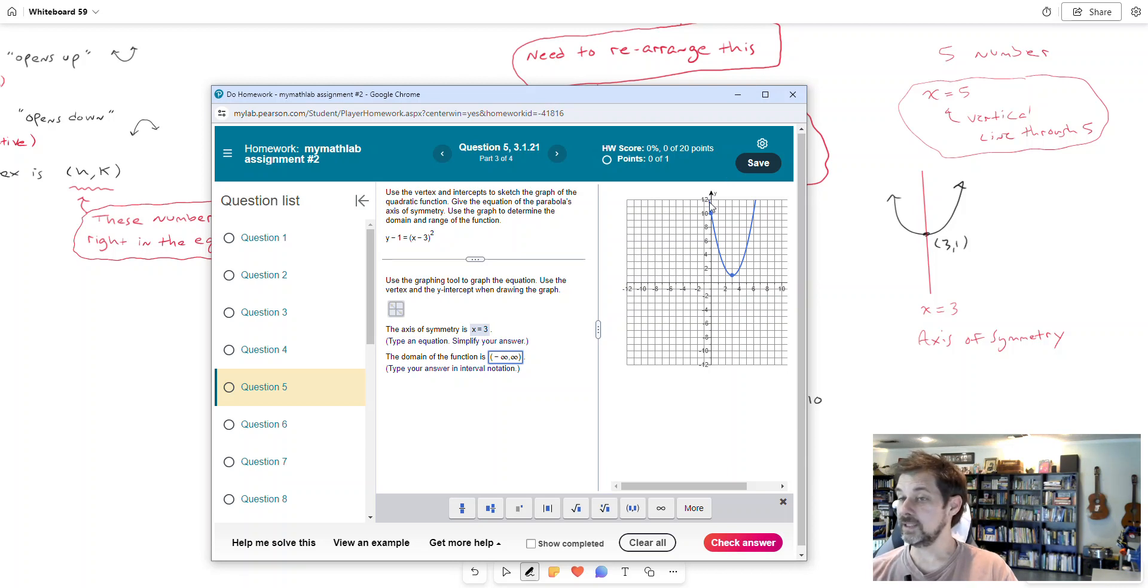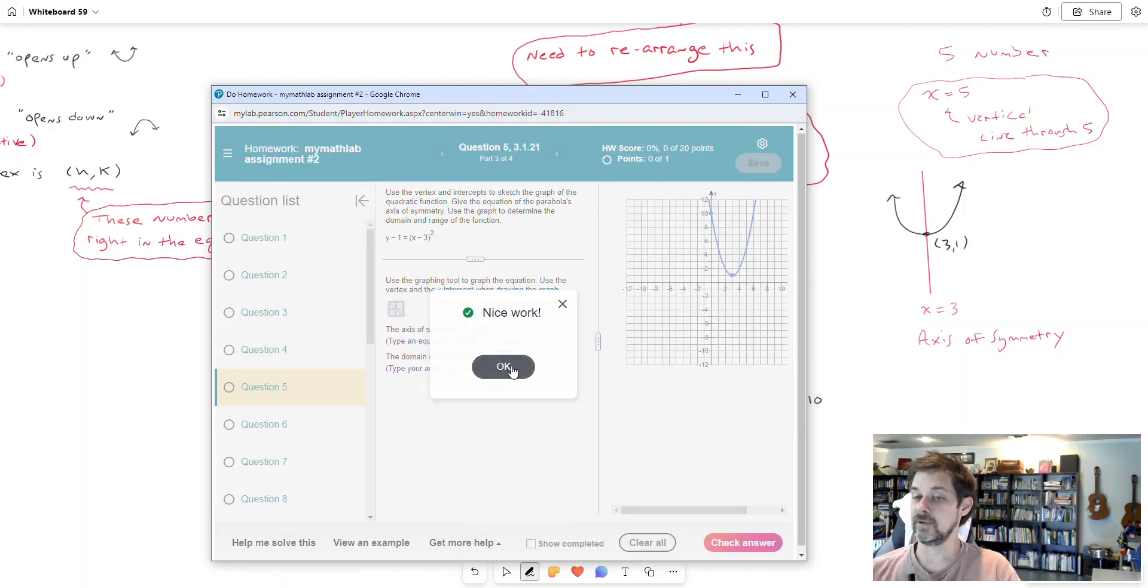X can be anything on these parabolas. The domain of the function is going to be negative infinity to infinity, which just means that X can be anything. It could be negative 10, no matter how far to the left or to the right I go, there's some point up there on that parabola that corresponds to it. If this graph really did stop right there and it went no further to the left, no further to the right, then the domain would be restricted. It would be like zero to six or six or seven, something like that. But that's not the case. It continues forever. So we'll check it and that will be right too.